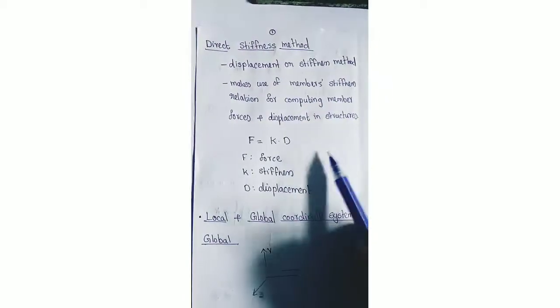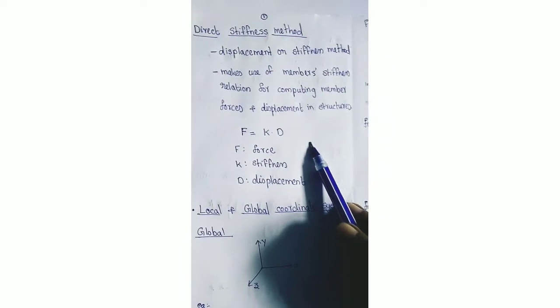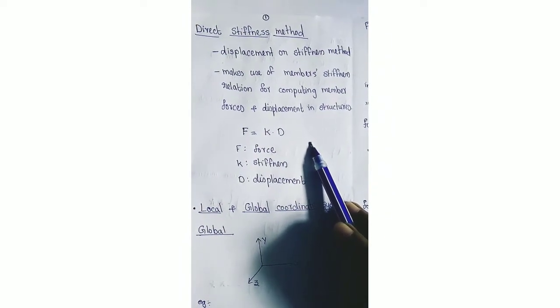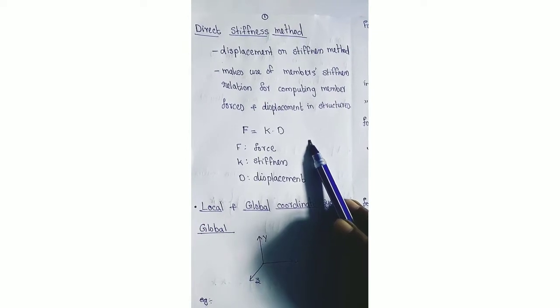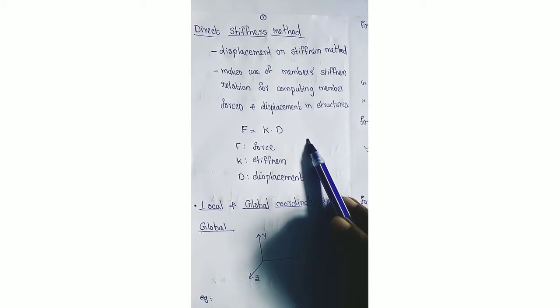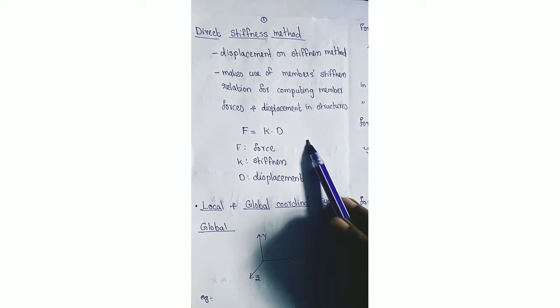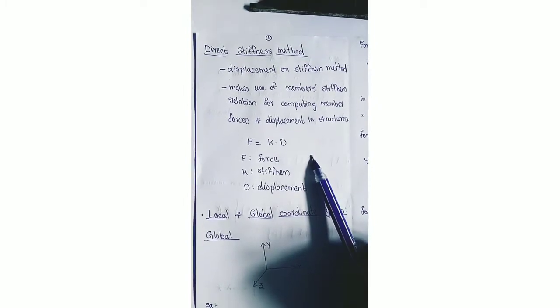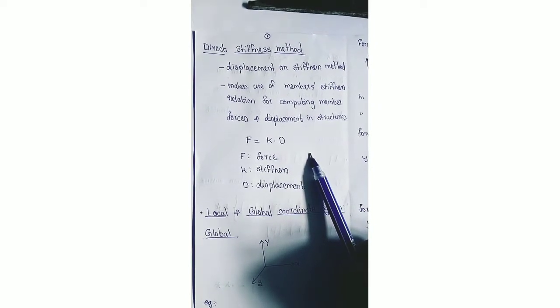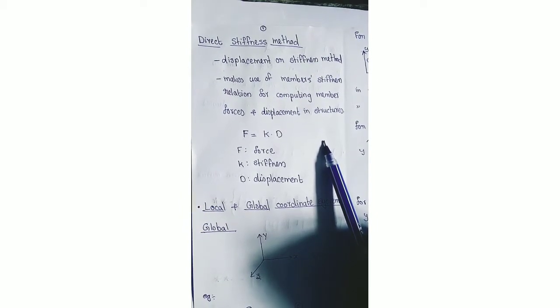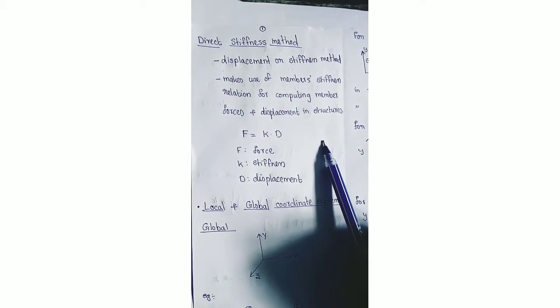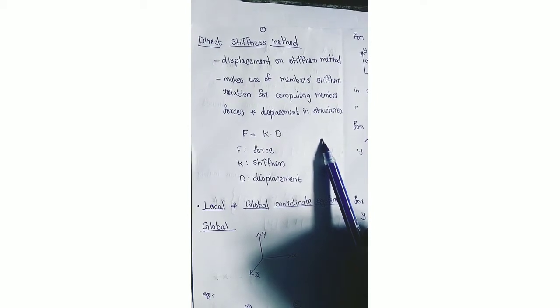Before the use of computers in the field of analysis, the methods mostly adopted were slope deflection and moment distribution, which also come under displacement method. But since computers can perform huge calculations with greater speed and accuracy, the direct stiffness method became more common, and this method is also used in finite element analysis.